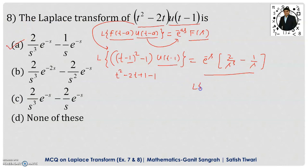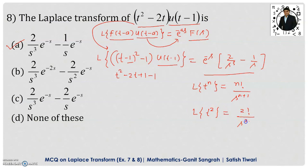The Laplace transform of t² comes from the formula L{t^n} = n! / s^(n+1). For t², n = 2, so it is 2! / s^3 = 2/s³. This completes the first method.